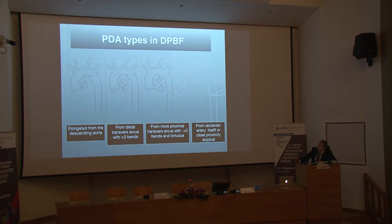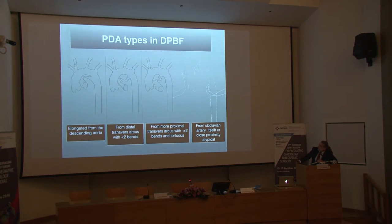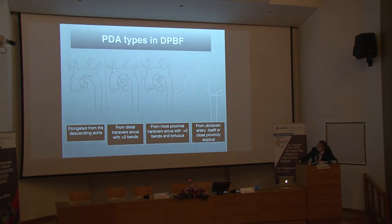In terms of ductus morphology, the best type is elongated from the descending aorta — similar to a normal ductus — seen in pulmonary atresia with intact ventricular septum, critical PS, and sometimes transposition. The second type arises more distally from the transverse arch with less than two bends. The third type, seen in VSD with pulmonary atresia and complex pulmonary atresia, is longer and more tortuous, generally not amenable to stenting. Atypical or bilateral ductuses can also be stented as initial palliation.